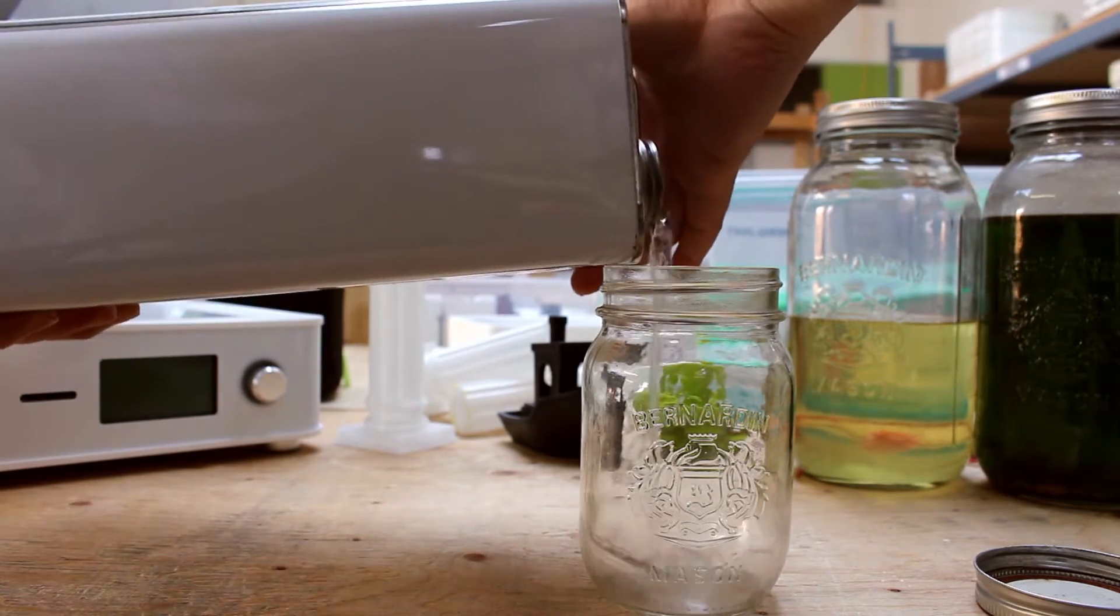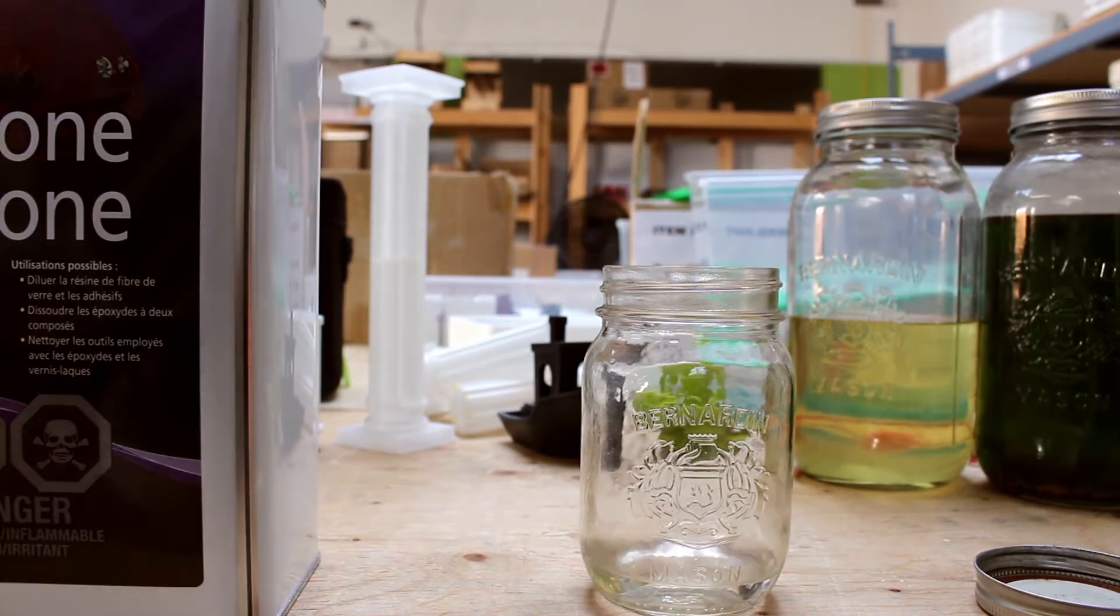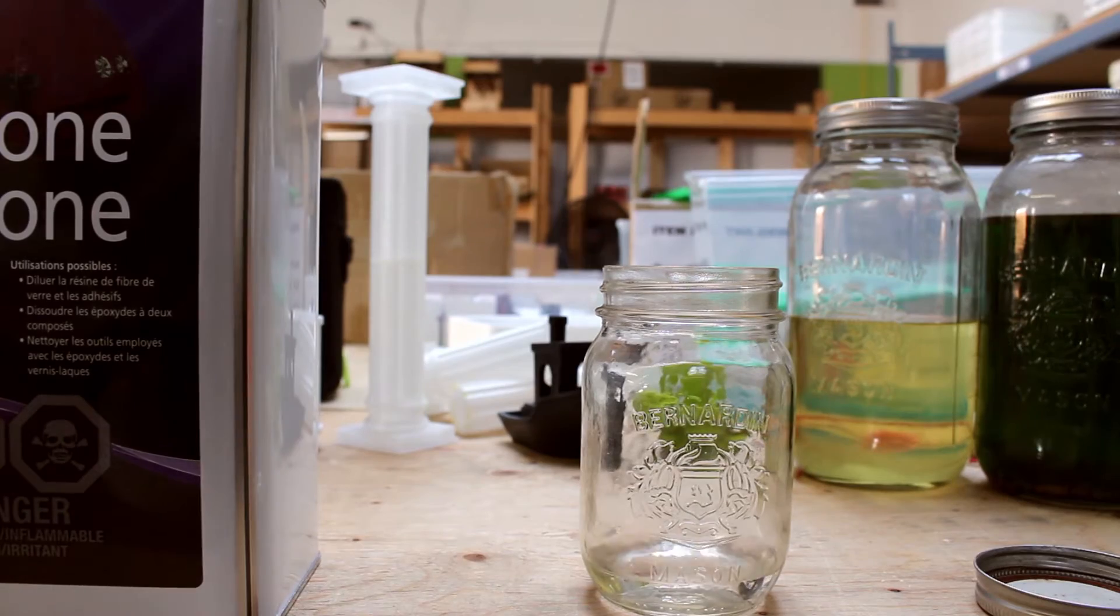How much acetone you'd use depends on how much sludge you want to make, but for the purpose of this test, I roughly poured in half a cup, so about 125 milliliters.